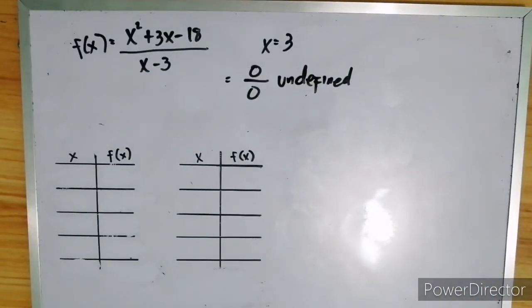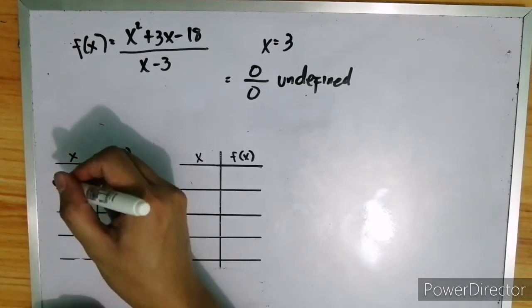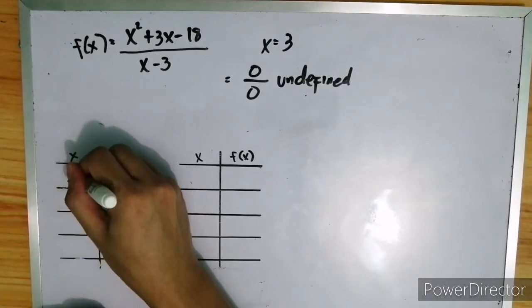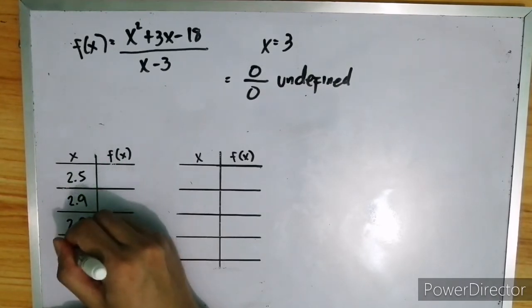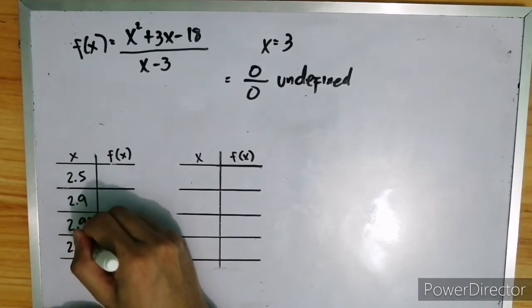But let's see what happens to the function as x approaches 3. So let's try to assign some values of x from the left side and from the right side of 3. So for the left side, let's use 2.5, 2.9, 2.99, then 2.999.